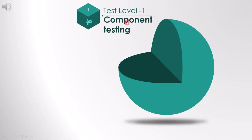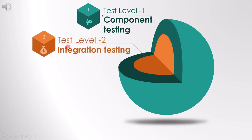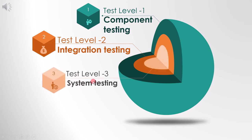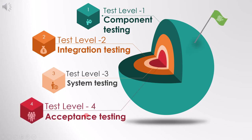The first is component testing. As soon as your code is ready, we perform component testing. Once that is done, the next level of testing is integration testing, where you'll be able to see how two or more components interact with each other. Next, you will carry out system testing, after which you will do acceptance testing.